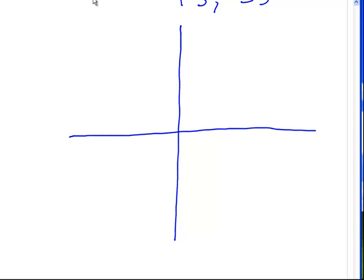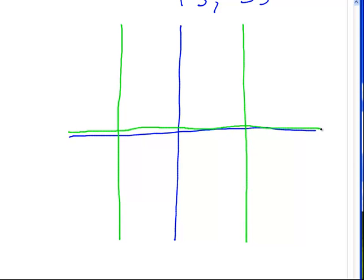Okay? And... That's the one vertical asymptote. This is the other vertical asymptote. And, the horizontal asymptote is just the x-axis.